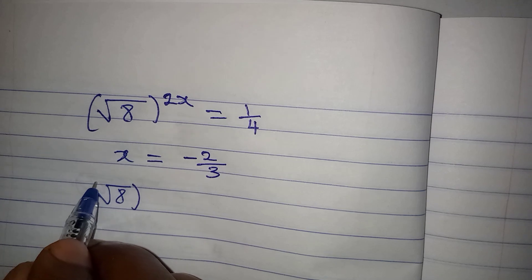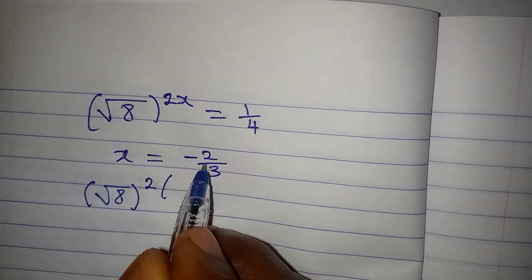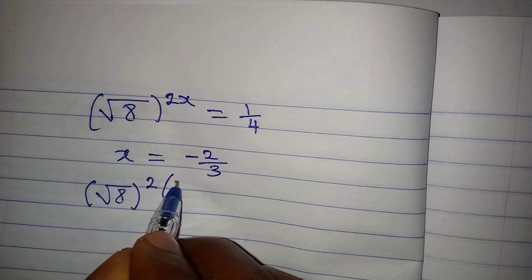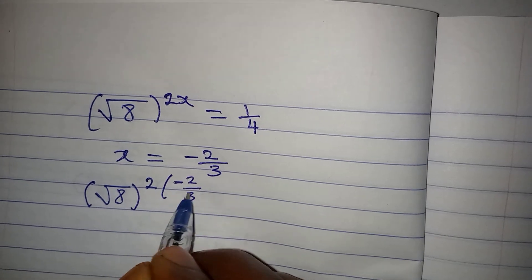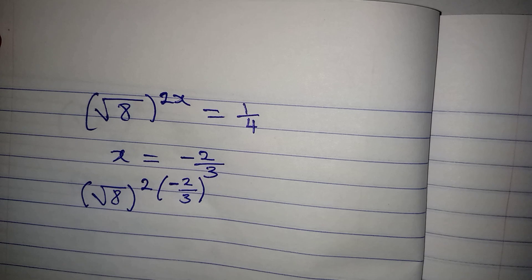That is our target. So we have square root of 8 to the power of 2, then multiply by minus 2 over 3. This is what we have. Let's continue.